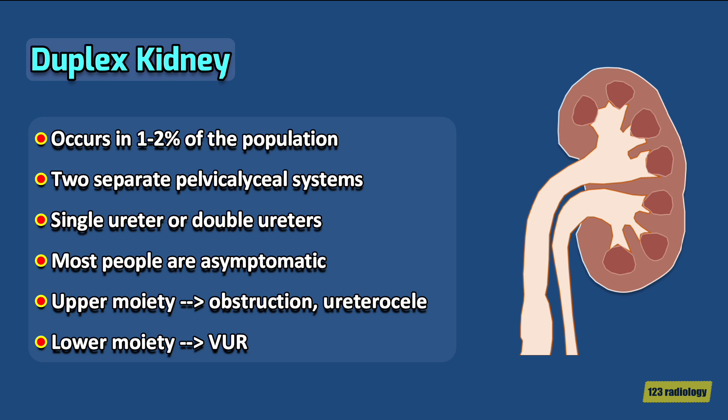It may be associated with other anomalies, such as reflux, ectopic ureteric orifice, or ureterocele. The upper moiety tends to be associated with obstruction or ureterocele, and the lower moiety tends to be associated with vesico-ureteric reflux. The majority of duplex kidneys are unilateral.